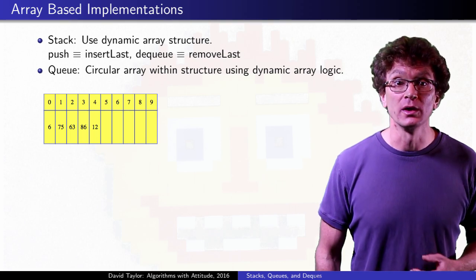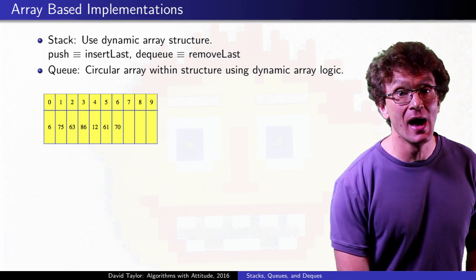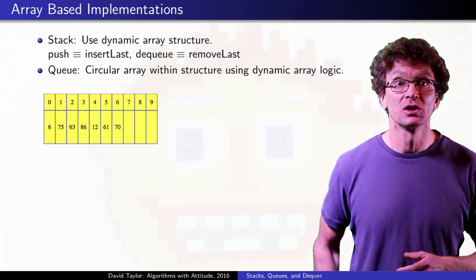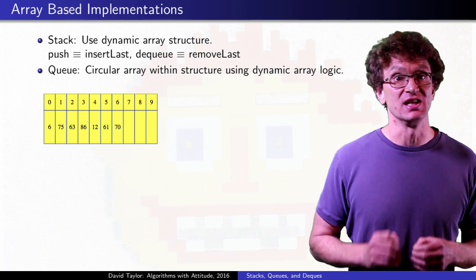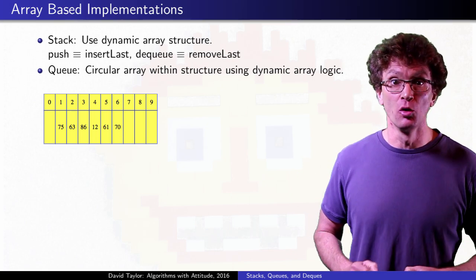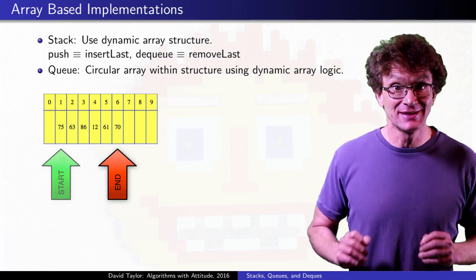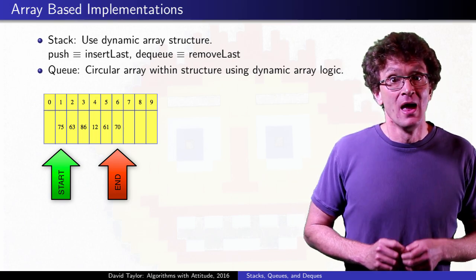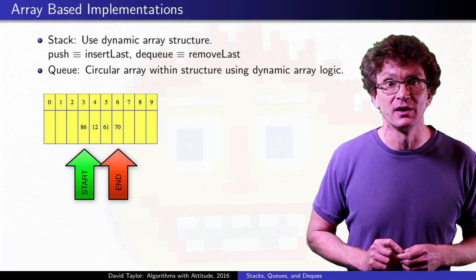So, for queues, when we enqueue, we start by adding to the end of the array, just like normal, and if we queued right past the capacity of the array, it would look just like our growing dynamic array. But at some point, we dequeue. We return and remove the first element, but instead of trying to shift everything towards the front of the array, instead, shift the logical start of the queue over by one. After doing that a few times, the front of the queue moves further back within the array.